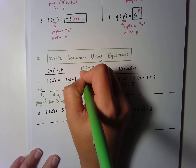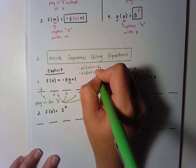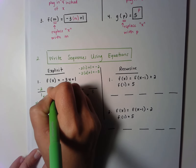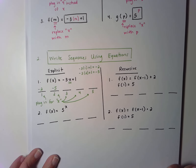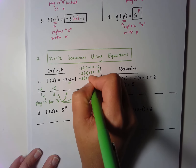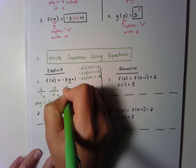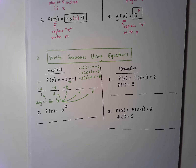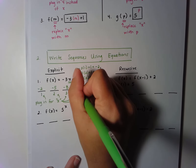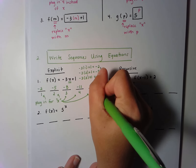If I plug in the number 2, I get negative 3 times 2 plus 1, which means I get negative 5. If I plug in the number 3, I get negative 3 times 3 plus 1, which gives me negative 8. If I plug in the number 4, I get negative 11. And if I plug in the number 5, I get negative 14.